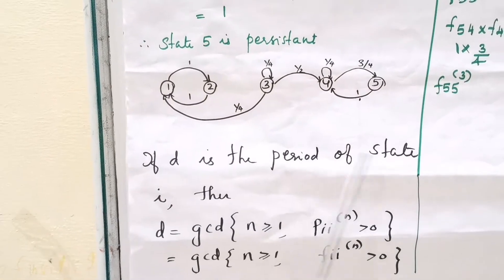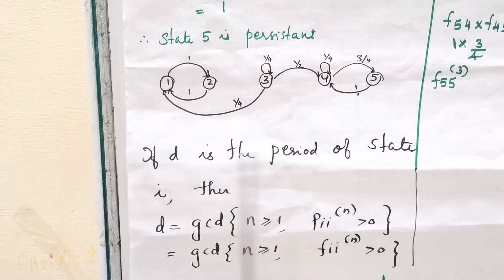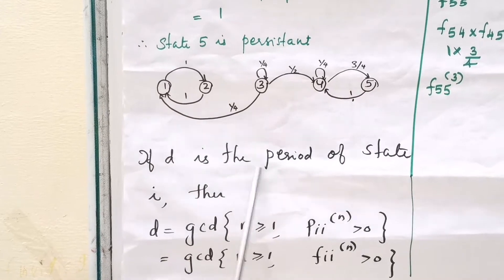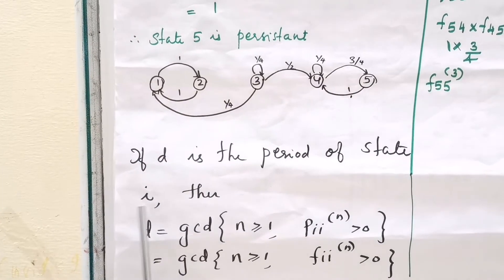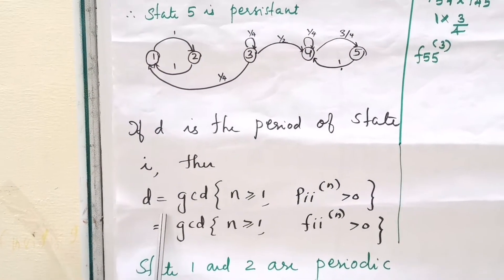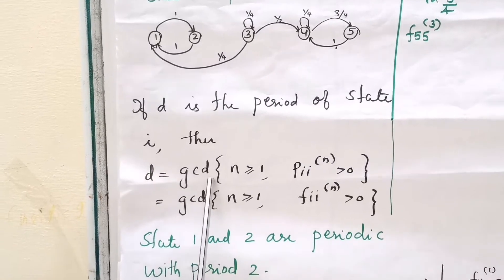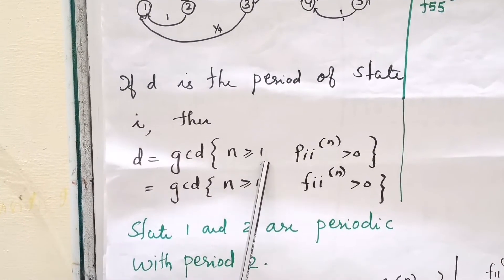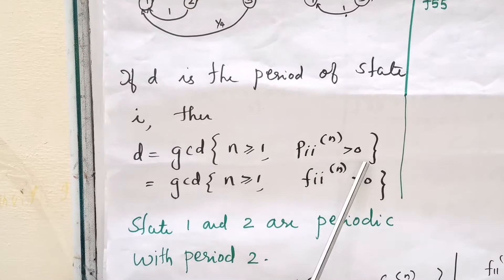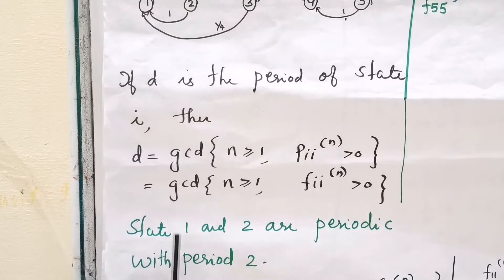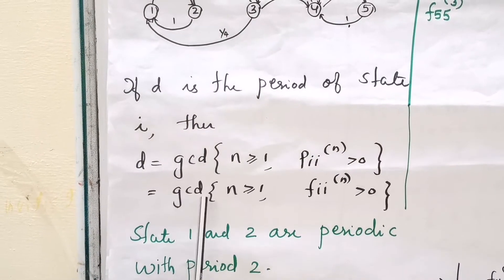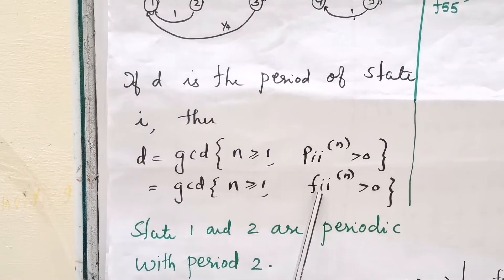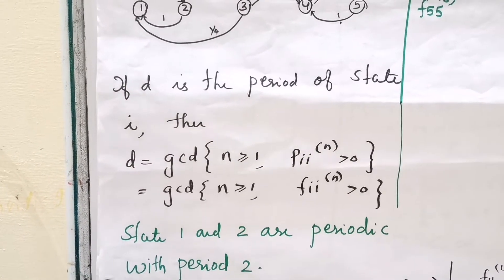Now let us consider the period of the state. If D is the period of state I, then D equals the greatest common divisor of all n ≥ 1 such that P(I,I,n) > 0, or equivalently, the GCD of all n ≥ 1 such that F(I,I,n) > 0.